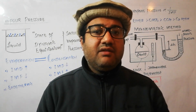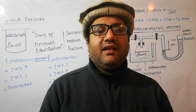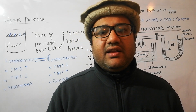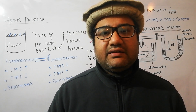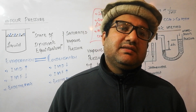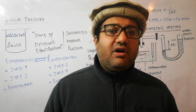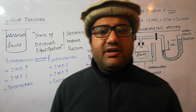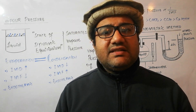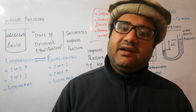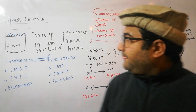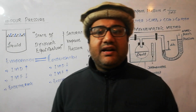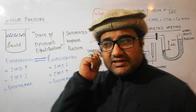At this stage the pressure exerted by the vapors of the liquid on the wall of the container is called the vapor pressure, or it is called the saturated vapor pressure. It is called saturated vapor pressure because it is the maximum vapor pressure of a liquid at that given temperature.